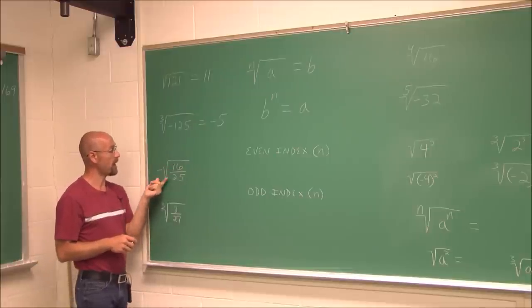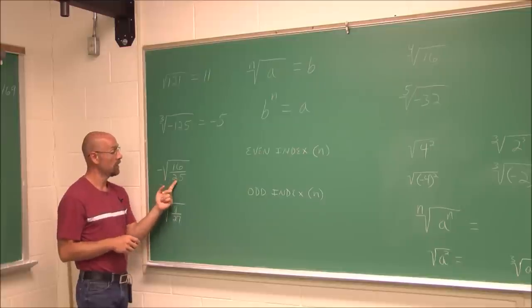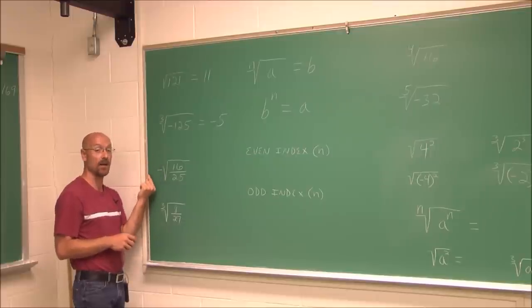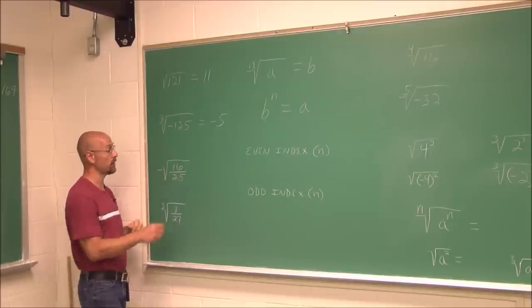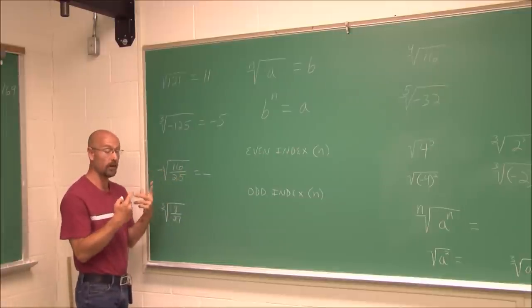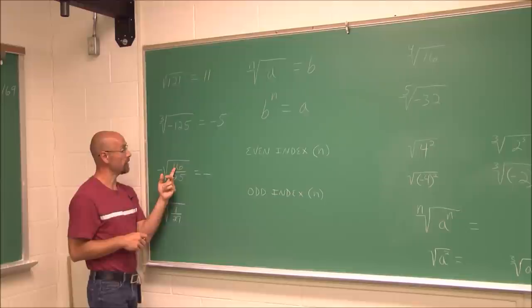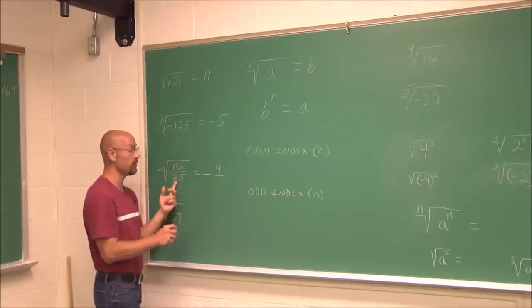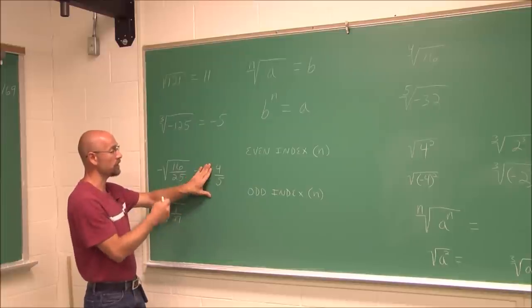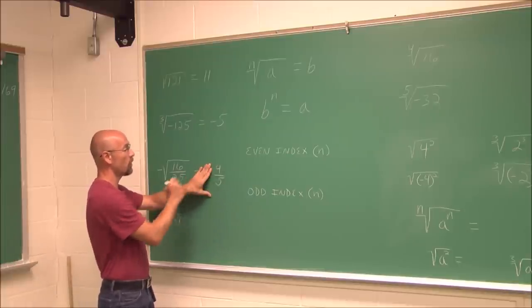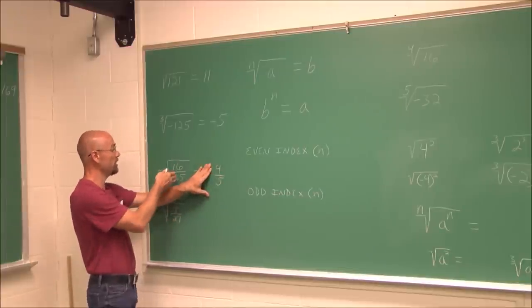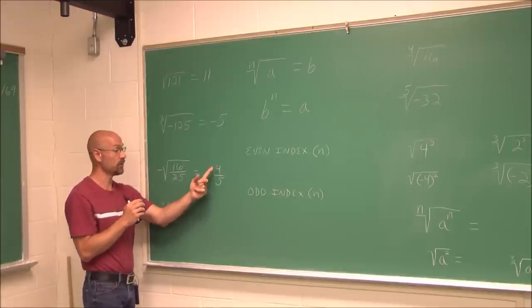Here I see a fraction under the radical. I identify 16 as a perfect square and 25 as a perfect square. There's a negative, but it's on the outside — it's saying a negative times this value. One odd negative gives a negative result. The square root of 16 is 4, and the square root of 25 is 5, so the result is negative 4/5. We can check: 4/5 times 4/5 is 16/25, times the negative gives negative 4/5.